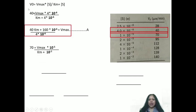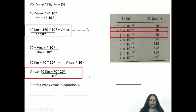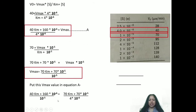Now apply the formula a second time for the second value — V0 equals 70 and its corresponding substrate concentration of 10⁻⁵. You get: 70 plus 70 Km plus 70 times 10⁻⁵ equals Vmax times 10⁻⁵. Solving for Vmax gives the whole value divided by 10⁻⁵. Now substitute this Vmax into equation A. Setting the left-hand side equal to the right-hand side — since both equal Vmax — and solving, you get Km equal to 10 to the power minus 5.